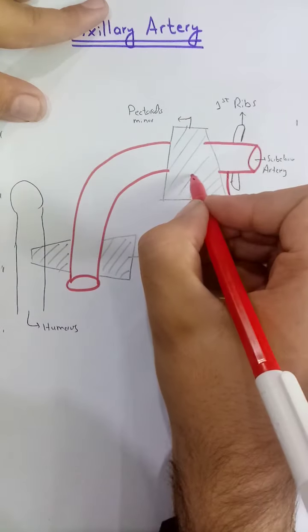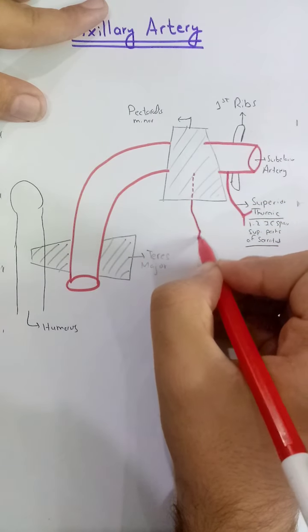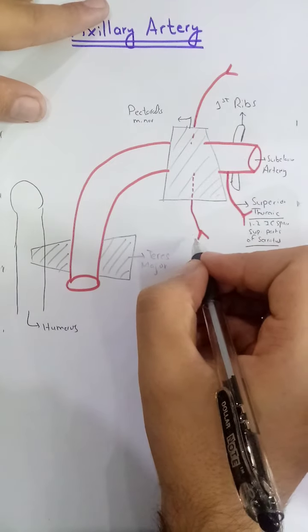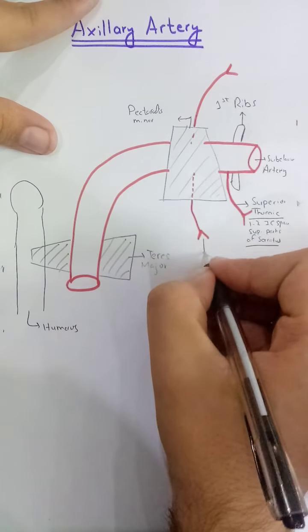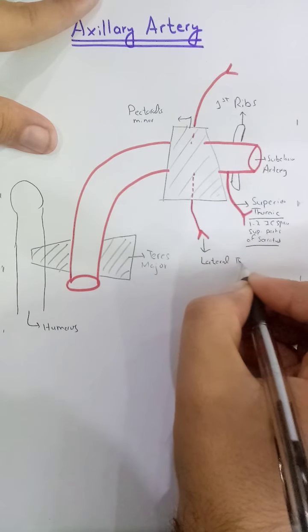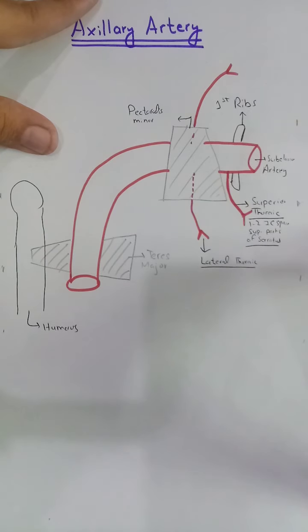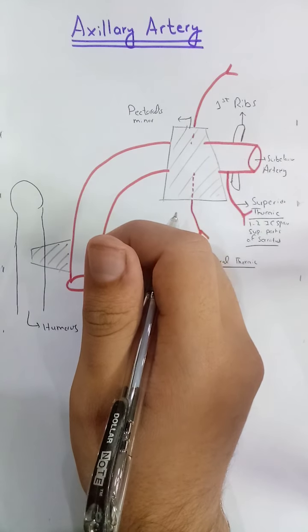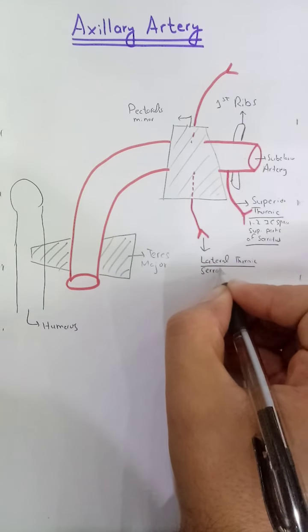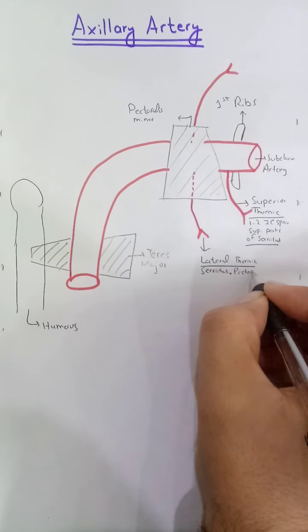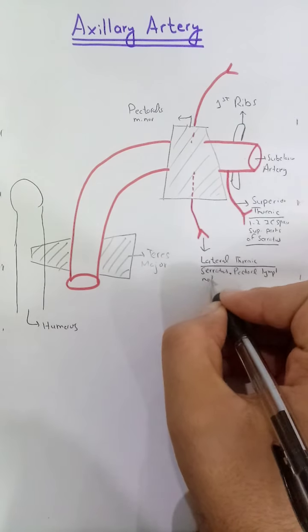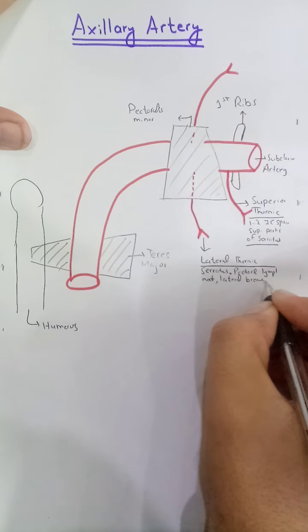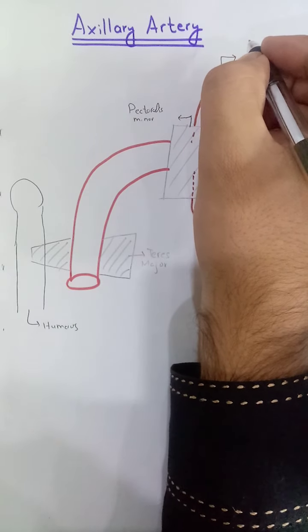The second part gives two branches. The first branch is the lateral thoracic artery. This lateral thoracic artery supplies the serratus anterior muscle and the lateral parts of the breast.